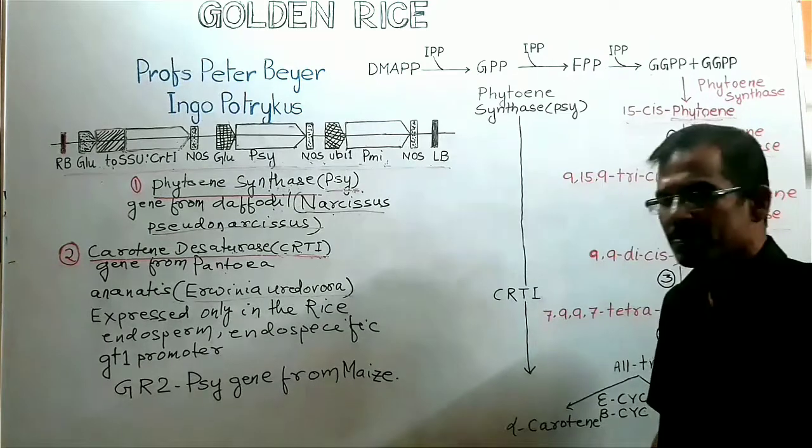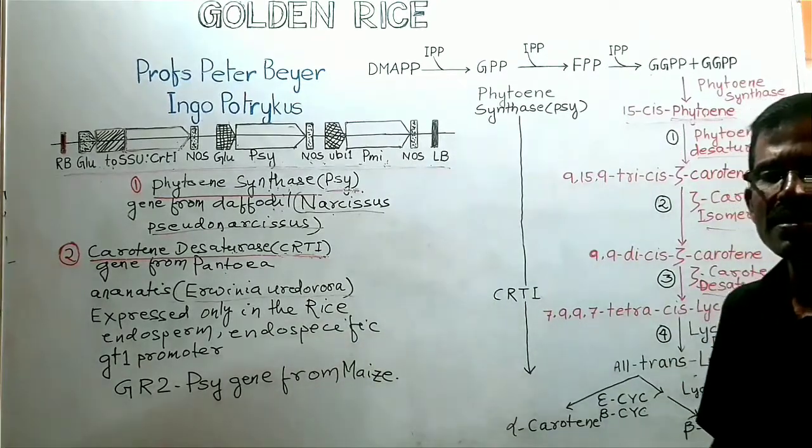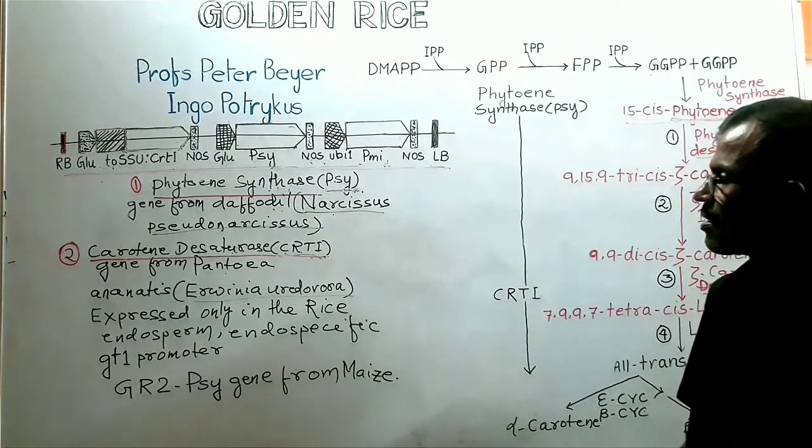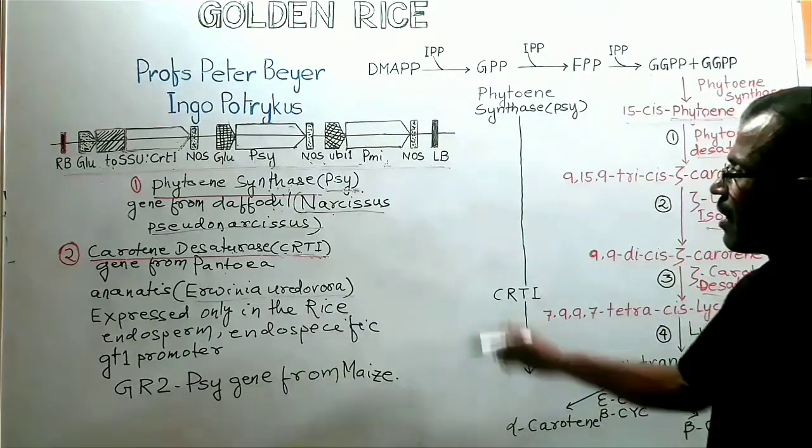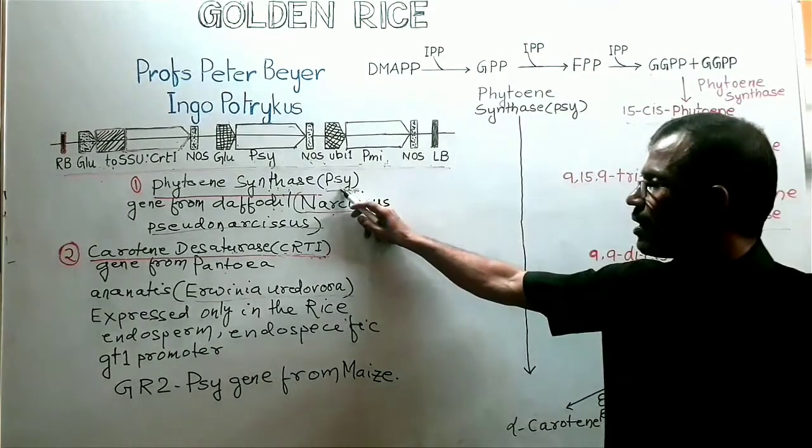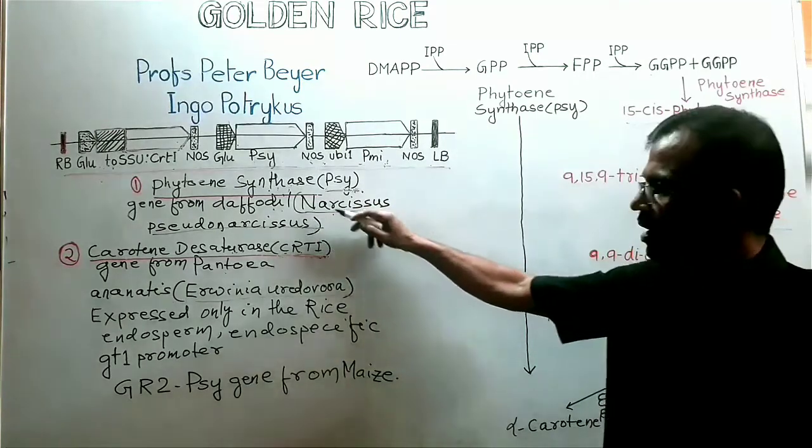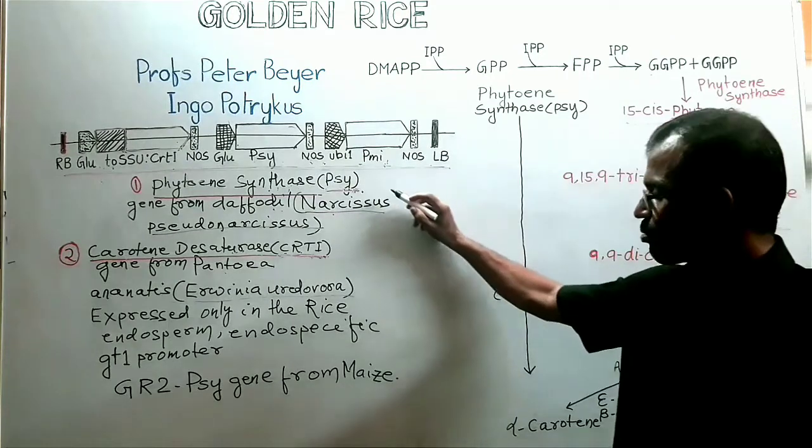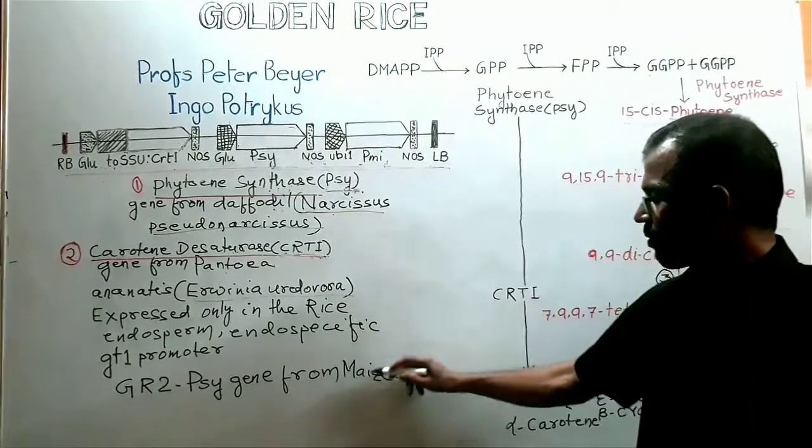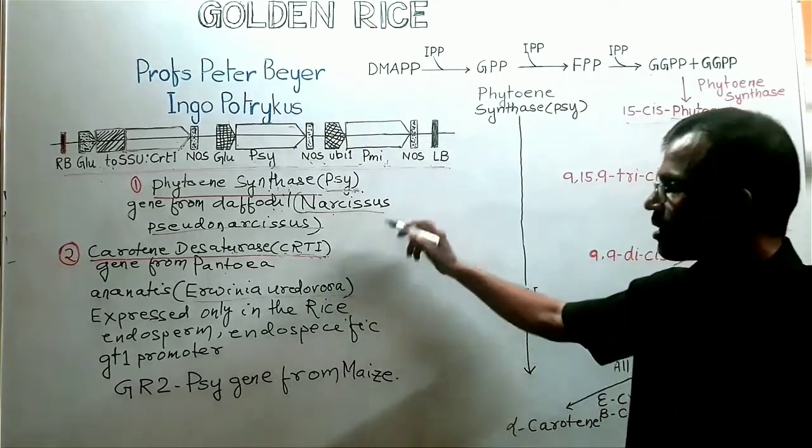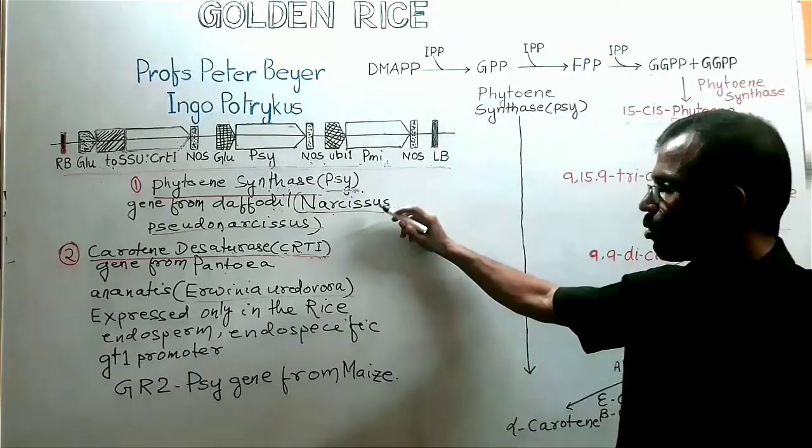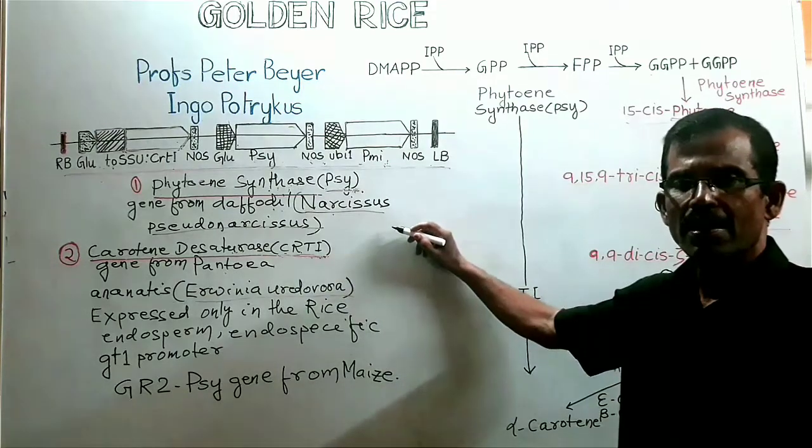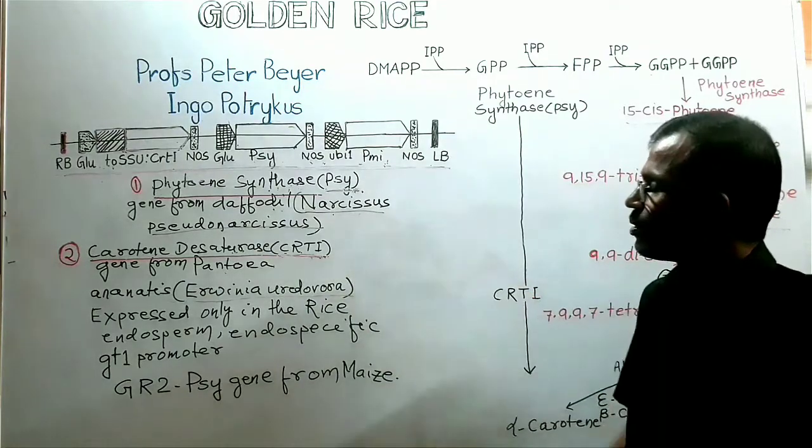Golden rice are of two types, first generation golden rice and second generation golden rice. First generation golden rice contains the PSY gene that is obtained from daffodil. Whereas in second generation golden rice, the PSY gene has been obtained from maize. This is the difference between first generation golden rice or GR1 and second generation golden rice or GR2.